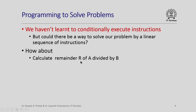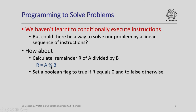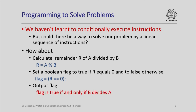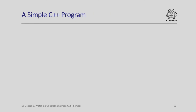We can calculate the remainder of a divided by b using the percent operator — the remainder operator in C++. Then we can set a boolean flag to true if r equals 0 and to false otherwise — this can be achieved through an assignment statement where the right hand side is a logical expression using a comparison operator. Finally, we output the flag, which is true if and only if b divides a.